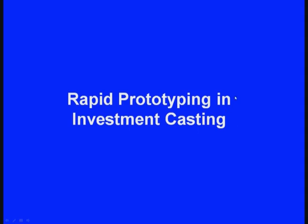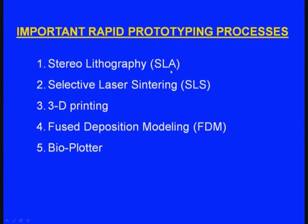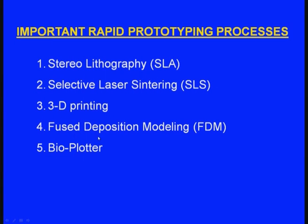Let us see rapid prototyping in investment casting process. Recently, rapid prototyping has emerged as a means for producing the patterns. The most difficult phase of investment casting is producing the pattern. Once we produce the pattern, we can dip it inside the ceramic slurry, build the ceramic shell and produce the casting — but producing the pattern is very difficult, so rapid prototyping has emerged to produce patterns. The important rapid prototyping processes are: stereolithography (SLA), selective laser sintering (SLS), 3D printing, fused deposition modeling (FDM), and bio plotter.